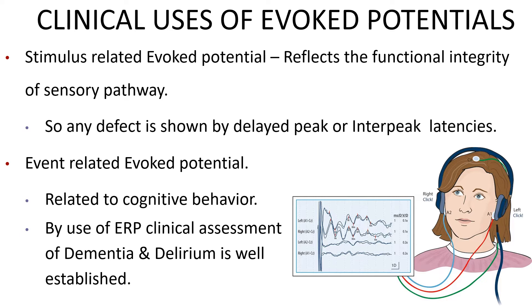The next type is event-related evoked potentials. They are related to cognitive behavior, and in the clinical setting they help in the assessment of dementia and delirium, which is now very well established.